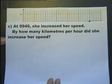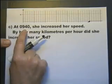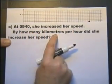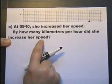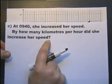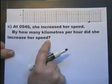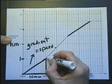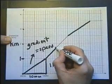Part C: At 9:40 she increased her speed. By how many kilometers per hour did she increase her speed? The first thing we'd better do is work out the speed that she attains over this period.